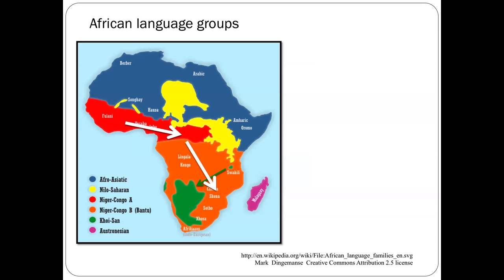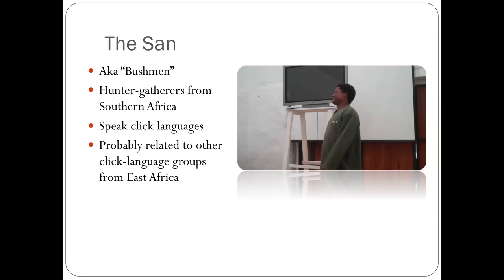Another group, sometimes known as the Khoisan or the San, probably originated in East Africa and then migrated down to where they are now most common, in South West Africa and Southern Africa. The San is a name given to this diverse group that have until recently lived as hunter-gatherers. An interesting feature of these individuals is that they speak what we call click languages.